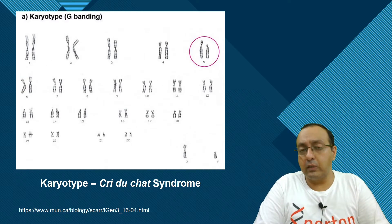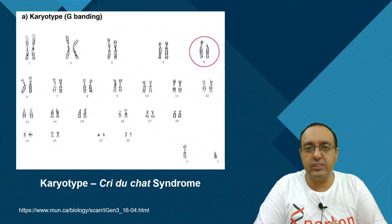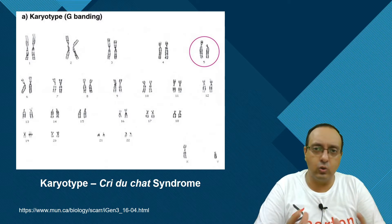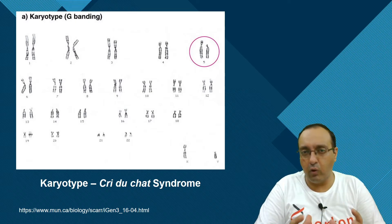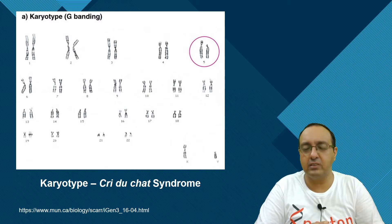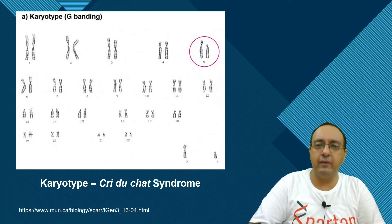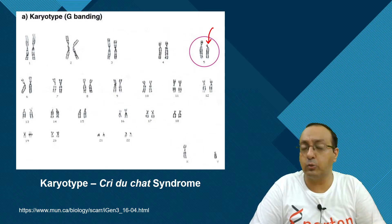Another syndrome uncovered was cri du chat syndrome, in which patients have very abnormal craniofacial defects and a peculiar cry resembling that of a cat — the name of the syndrome derives from this. This is caused by a small deletion in one copy of chromosome 5.